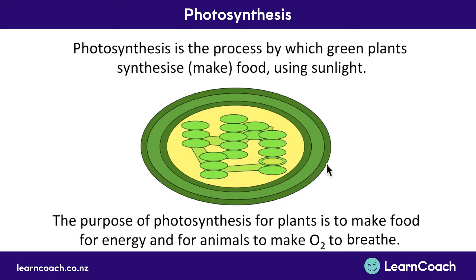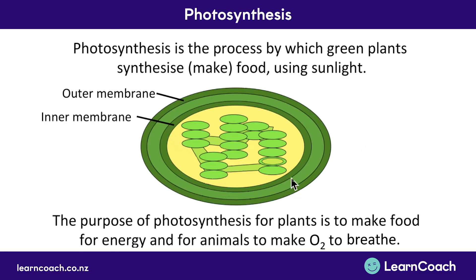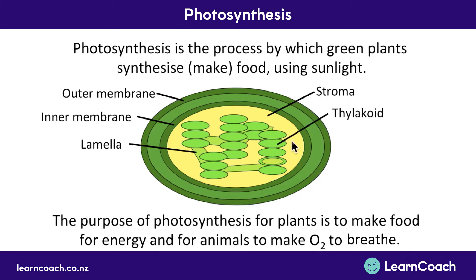Here is a diagram of a chloroplast. It has an outer membrane and an inner membrane. Working inward, we have the stroma — the space inside the inner membrane. We have the lamella, which holds everything together inside the chloroplast, and we have these little disks called thylakoids. Many of them stack up, and a stack of thylakoids is called a granum — one of the most helpful words when describing this organelle.